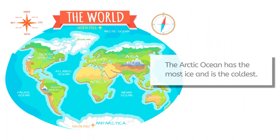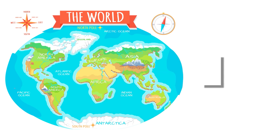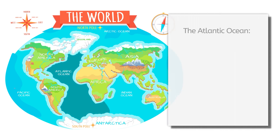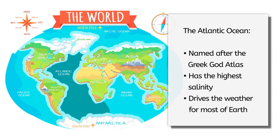While the Arctic Ocean has the most ice, and therefore is the coldest ocean, the Indian Ocean has the highest water temperatures. Finally, the Atlantic Ocean, named after the Greek god Atlas, is the ocean with the highest salinity, or concentration of salt in the water. It is also the most important driver of the weather on Earth.